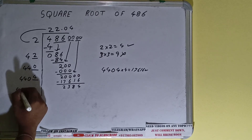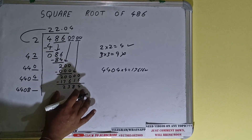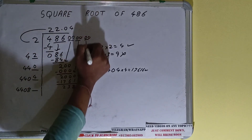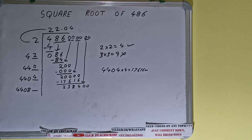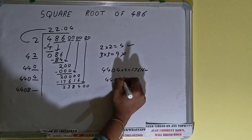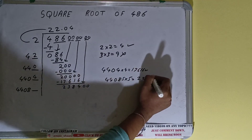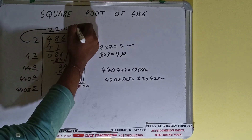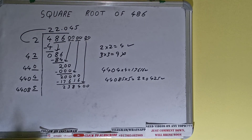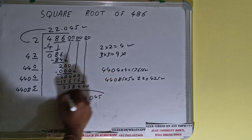44404 plus 4 gives 44408. Keep one digit extra. Bring the next pair of zeros down and it becomes 238,400. Compare 44 with 238: 44 times 6 gives 264 and 44 times 5 gives 220, so we can try five times. 440085 into 5 gives 220,425, which is good to take. We don't need to calculate further because we got the answer correct up to three decimal places. The square root of 486 is 22.045.